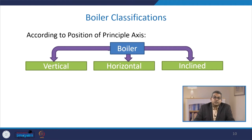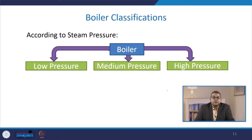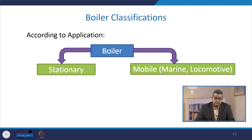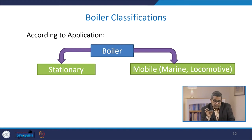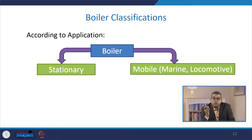One classification is based on the position of the principal axis — vertical, horizontal, or inclined. Classification by steam pressure includes low pressure, medium pressure, and high pressure. Based on application, boilers are broadly classified as stationary or mobile. Stationary boilers are more common; mobile boilers may be marine or locomotive type.